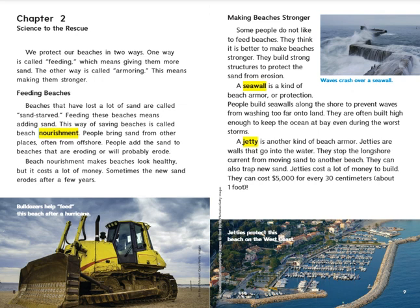Making beaches stronger: Some people do not like to feed beaches. They think it is better to make beaches stronger by building strong structures to protect the sand from erosion. A seawall is a kind of beach armor or protection. People build seawalls along the shore to prevent waves from washing too far onto land. They are often built high enough to keep the ocean at bay during the worst storms. A jetty is another kind of beach armor. Jetties are walls that go into the water. They stop the longshore current from moving sand to another beach and can also trap new sand. Jetties cost a lot of money to build — they can cost $5,000 for every 30 centimeters, about one foot.